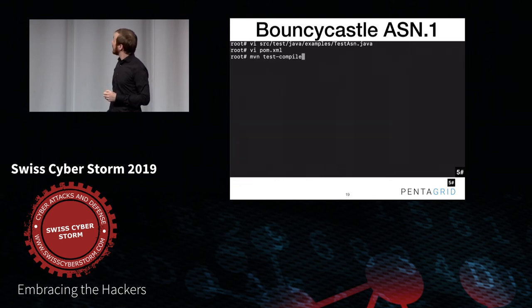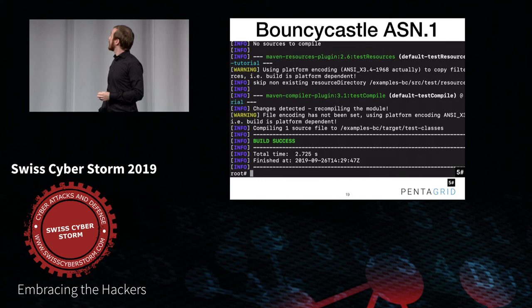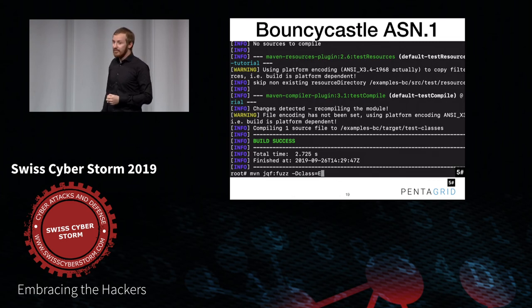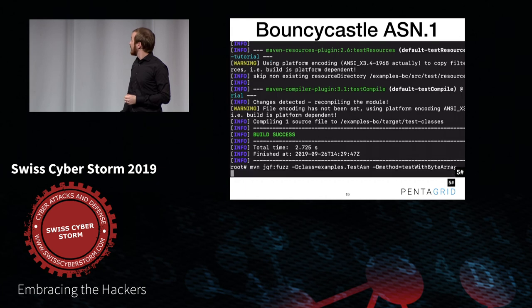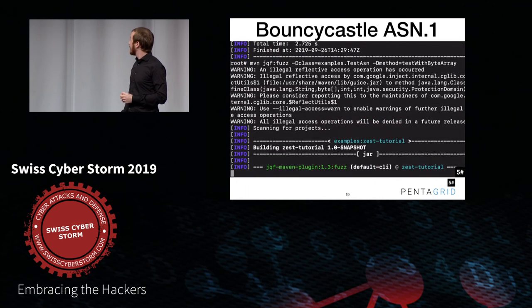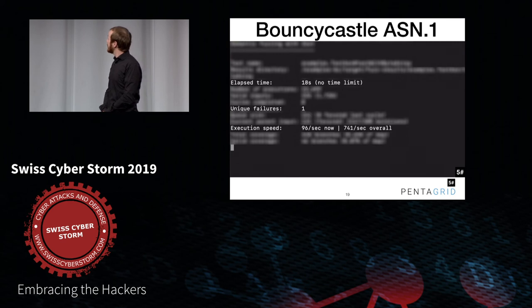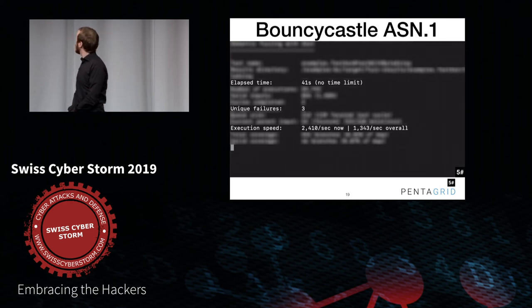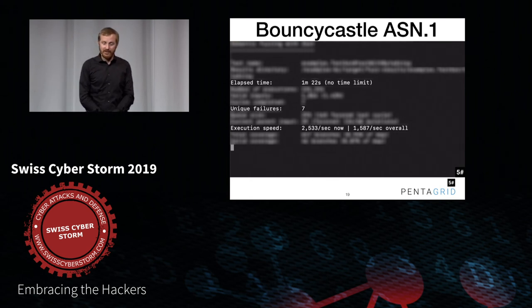Compiling and running it with Maven, you can say please get all the dependencies and compile it. Then inside Maven you just say please run the fuzzer — JQF fuzz — and specify the class and method you want to test. Maven will happily run the fuzzer for us. This is a little bit fast-forwarded so we don't have to wait too long — seconds fly here. But you see after a little bit more than one minute, we already have seven failures inside Bouncy Castle's ASN1 parser.